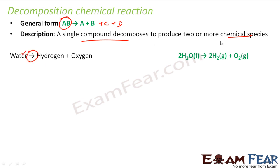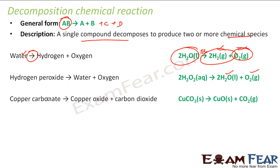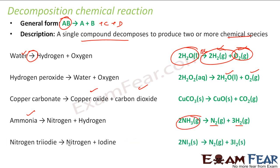For example, you have water — you pass electricity through it and it becomes hydrogen and oxygen via electrolysis. This water compound breaks into two smaller compounds. Similarly, hydrogen peroxide converts to hydrogen and water. Copper carbonate, when heated, becomes copper oxide and carbon dioxide.